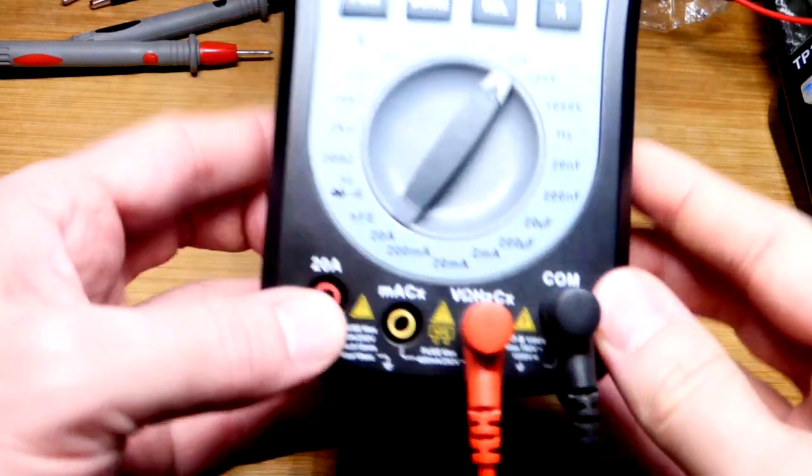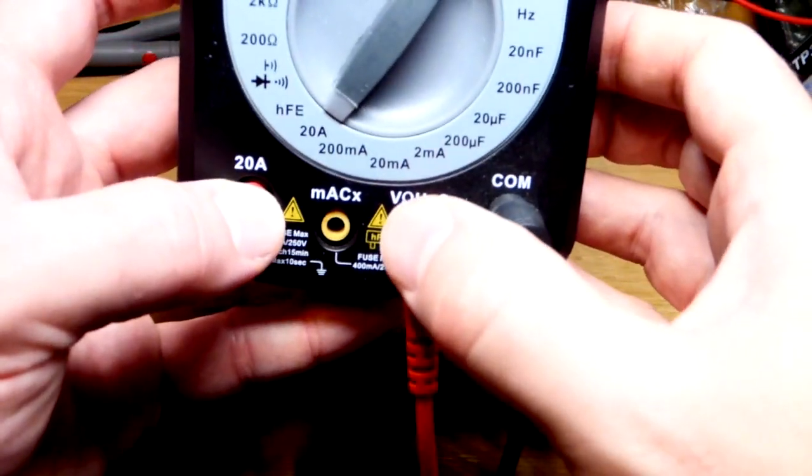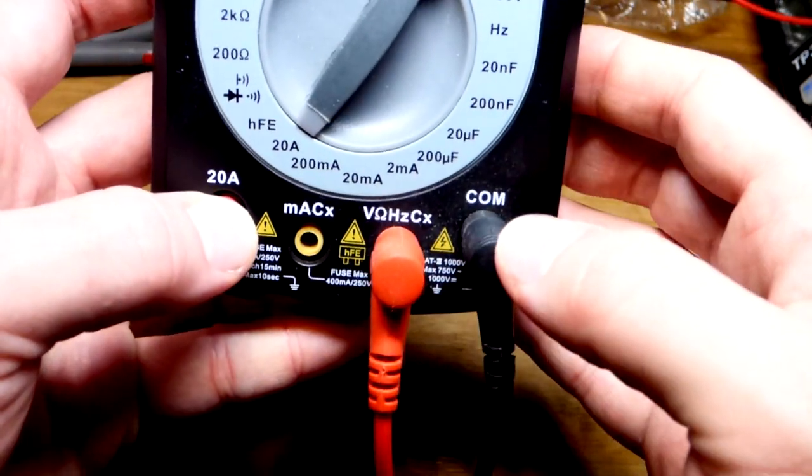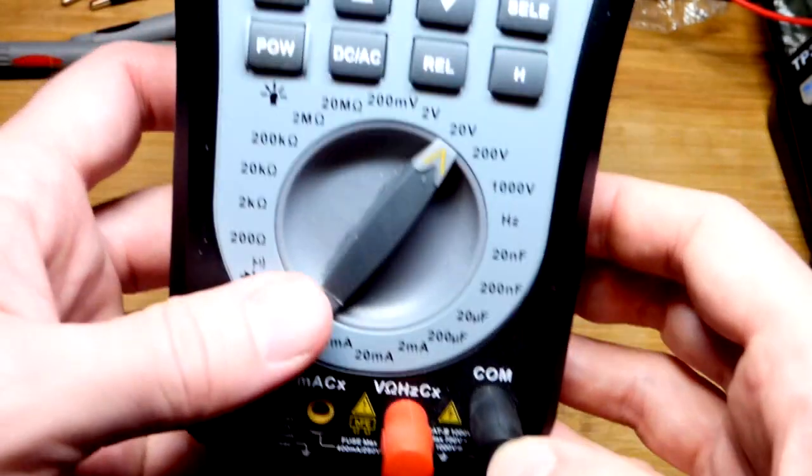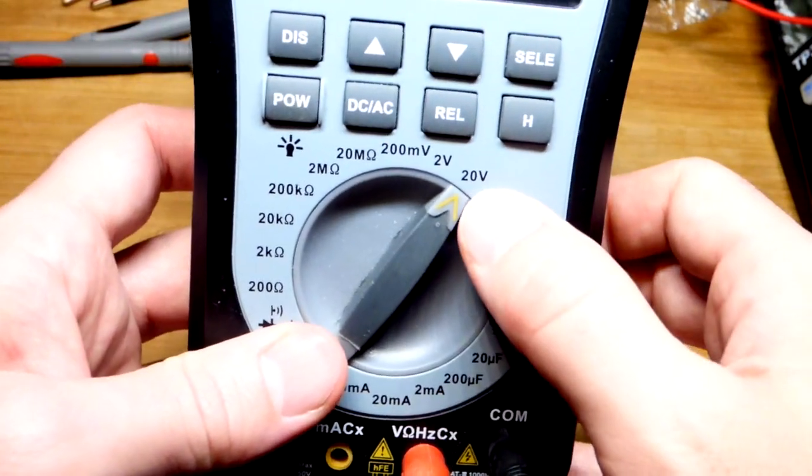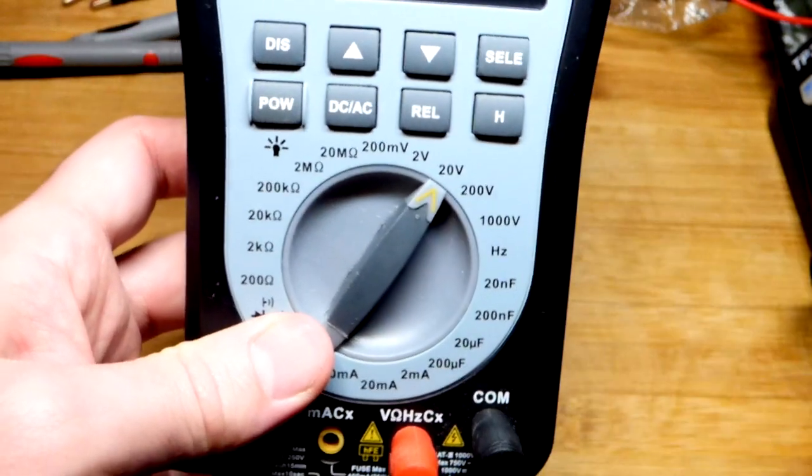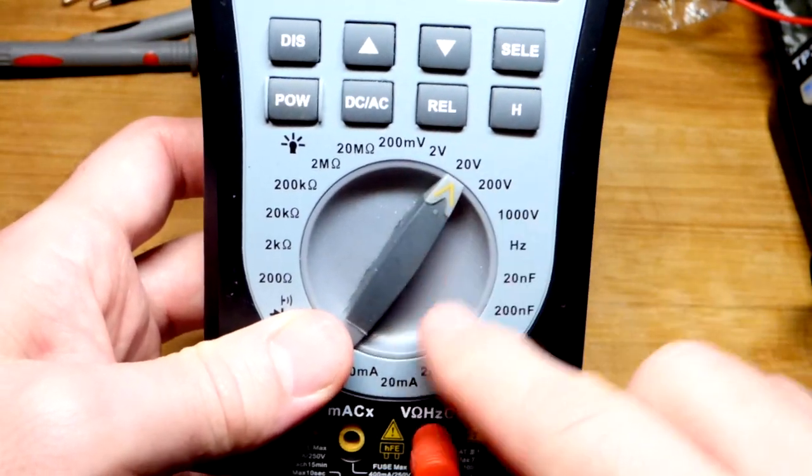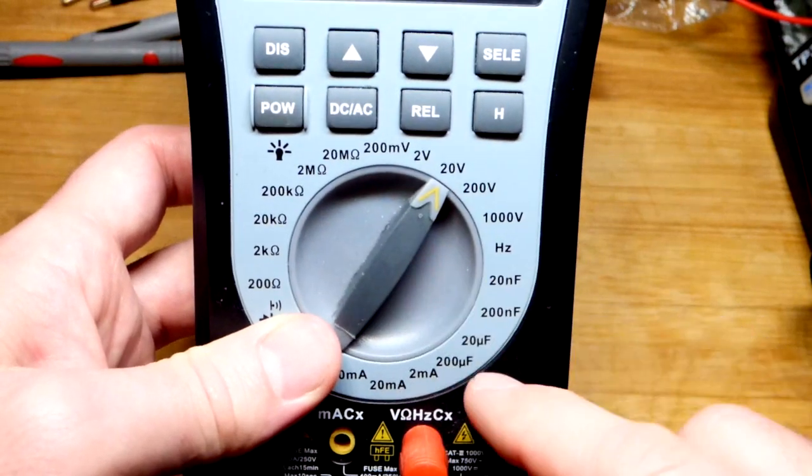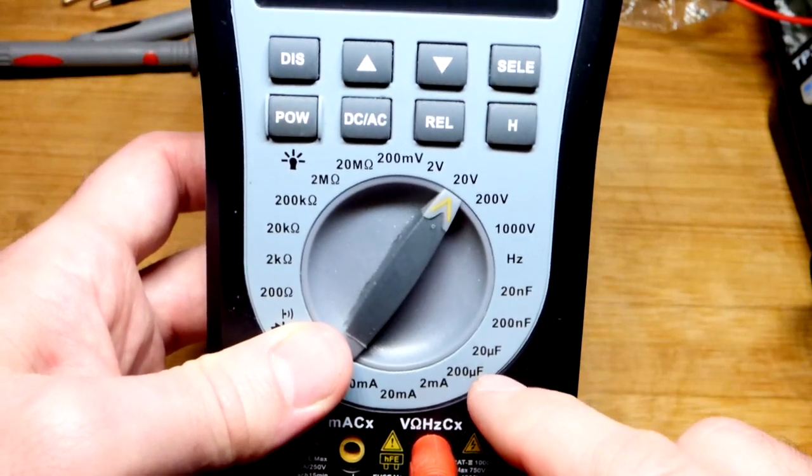So now getting the meter ready is really easy. Make sure red probe is where the V is. And then black probe to com. That's universal with meters. So some of them are auto-ranging. There's just one setting for voltage. The meter I normally use has that setting. And this one has a range that you have to set it to. So it's not auto-ranging.